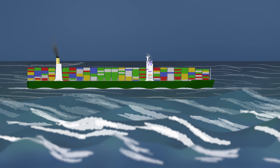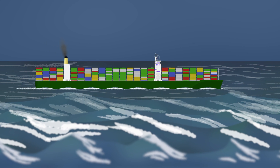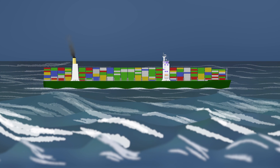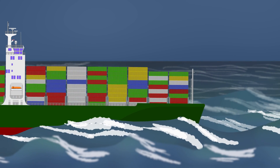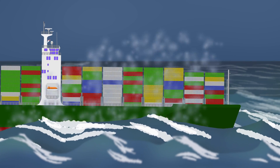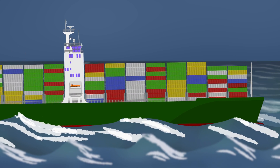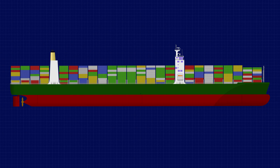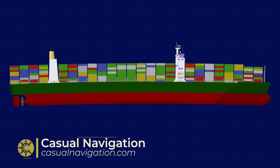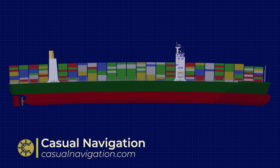Everyone imagines ships as massive solid lumps of steel that slowly plod around the world, but the reality is somewhat different. They're actually flexible and can bend and move depending both on how they're loaded and the motion of the ocean. In technical terms, it's known as hogging and sagging, which is really just an engineering description of the shape of a deformed structure which occurs when a load is applied.